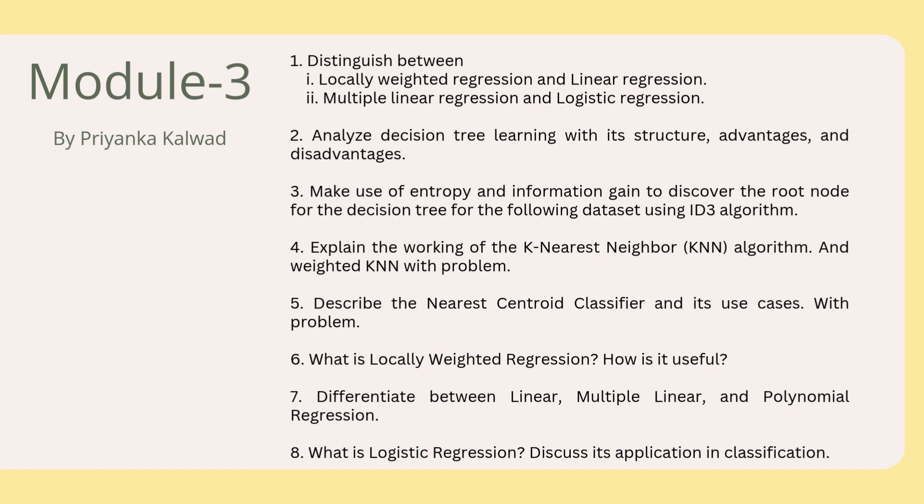Module 3: 1. Distinguish between locally weighted regression and linear regression. 2. Compare multiple linear regression and logistic regression. 3. Analyze decision tree learning with its structure, advantages and disadvantages. 4. Make use of entropy and information gain to discover the root node for a decision tree using the ID3 algorithm. 5. Explain the working of the k-nearest neighbor algorithm and weighted KNN with problem. 6. Describe the nearest centroid classifier and its use cases with problem. 7. What is locally weighted regression and how is it useful? 8. Differentiate between linear, multiple linear and polynomial regression. 9. What is logistic regression? Discuss its application in classification.